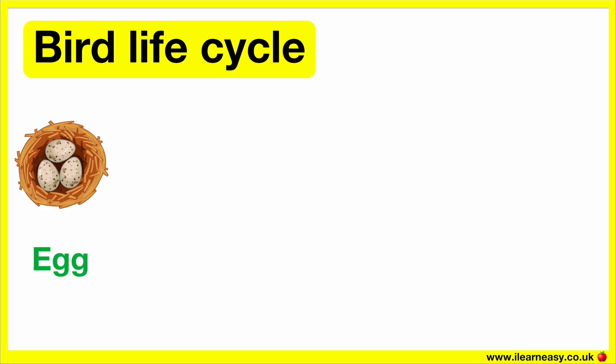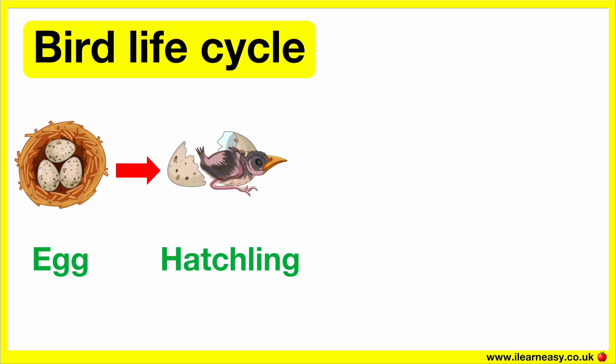The bird will do this until the embryo inside the egg has developed into a chick. Once it has developed into a chick, the egg is ready to hatch. The chick will then begin to crack the egg in order to get out of it. This can take a few hours or even a few days. The chick that emerges is fragile and can't care for itself. This stage is known as the hatchling.